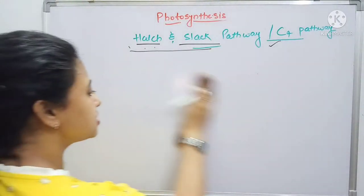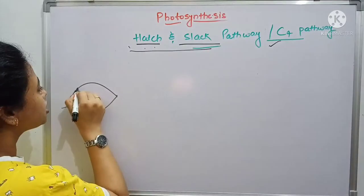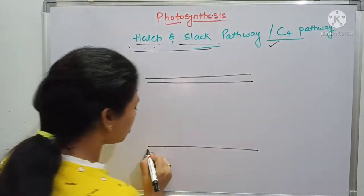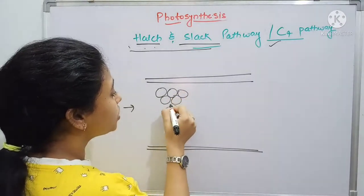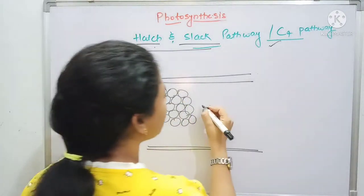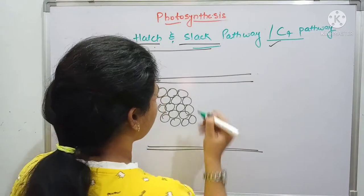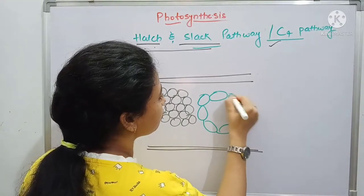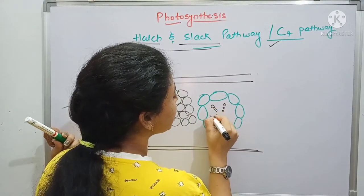First of all, what is Kranz anatomy — you should know about this. This is a leaf and if I take a small part of this leaf, it looks like this. This is the upper epidermis and this is the lower epidermis. In Kranz anatomy, these are the cells which are called the mesophyll cells. Inside, such large cells are found, which cover the xylem and phloem.